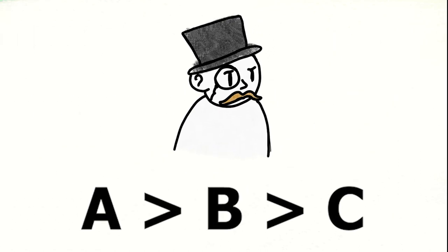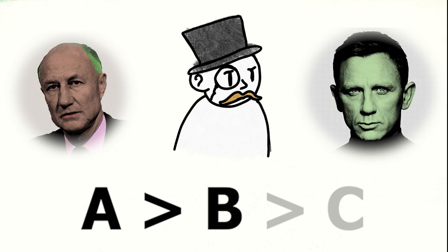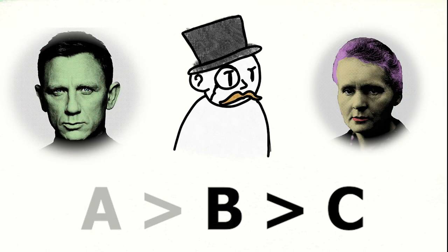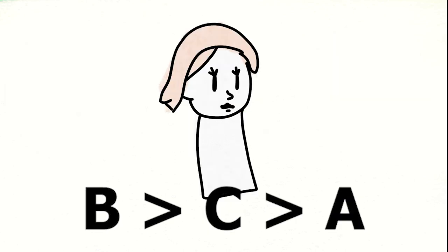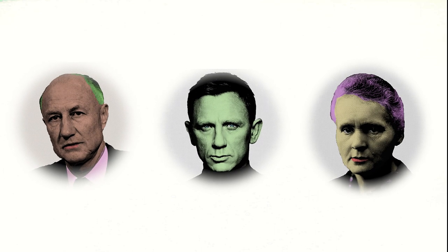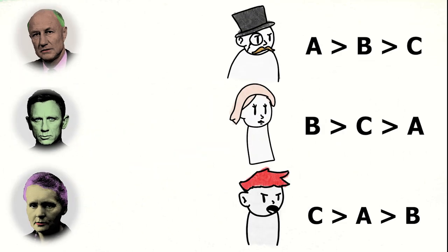You can read this as: group 1 prefers A over B and B over C. The relationships are transitive, so group 1 prefers A over C as well. Group 2 prefers B over C and C over A, and so on and so forth. As we can clearly see, no decision can be achieved — each candidate is preferred by roughly a third of the population.